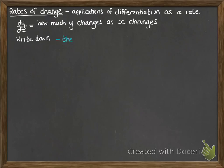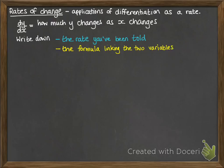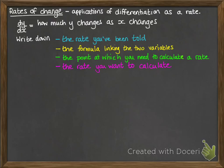So when you get a rates of change question, there are some things that you should write down straight away. The first thing is the rate that you've been told. Then you want a formula that links the variables that you've been given. Then you want the point at which you need to calculate a rate. And finally, the rate that you want to calculate. Once you've got those four things written down, you should easily be able to see how to put them together to get your answer. And I'll show you this with an example.